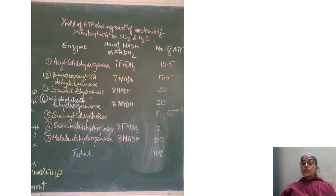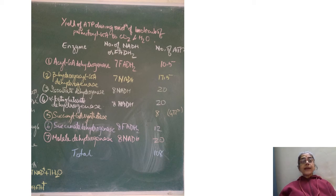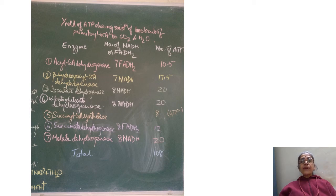We will now study the ATP yield during oxidation of one molecule of palmitoyl-CoA to carbon dioxide and water, involving enzymes of beta oxidation, the TCA cycle, and the electron transport chain. Acyl-CoA dehydrogenase forms seven FADH2; one FADH2 gives 1.5 ATP, so seven FADH2 give 10.5 ATP. Beta-hydroxyacyl-CoA dehydrogenase forms seven NADH; one NADH yields 2.5 ATP, so seven NADH yield 17.5 ATP.